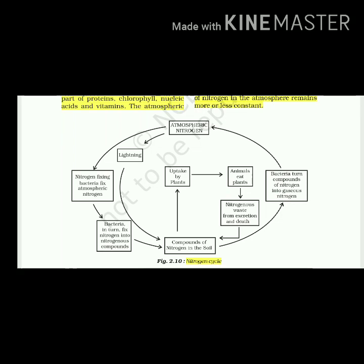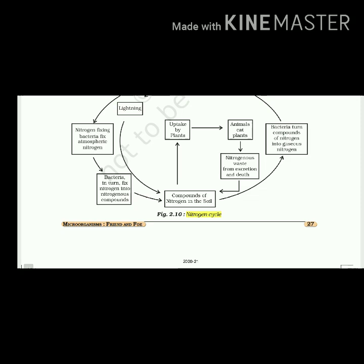In the nitrogen cycle: atmospheric nitrogen is fixed by nitrogen-fixing bacteria into nitrogenous compounds in the soil. Through lightning also, nitrogen compounds are added to the soil. Bacteria convert compounds of nitrogen back into gaseous nitrogen. Plants take up nitrogen compounds; animals eat plants; nitrogen is returned through excretion and death back as compounds of nitrogen in the soil.